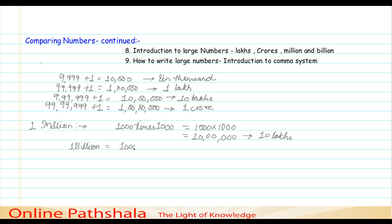Now let me talk about one billion. One billion is one thousand times one million, that is one thousand million, or you can say one thousand into ten lakhs. So lakhs and crores are used in the Indian system, and millions and billions are used to denote large numbers in the international system.